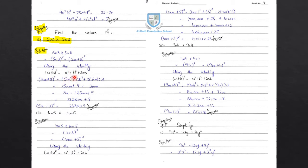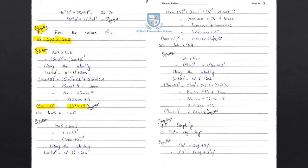500 square equals 250,000. 3 square equals 9. 2 times 500 times 3 equals 3000. So 250,000 plus 3000 plus 9 equals 253,000 plus 9, which gives 253,009. Therefore 500 plus 3 whole square equals 253,009.